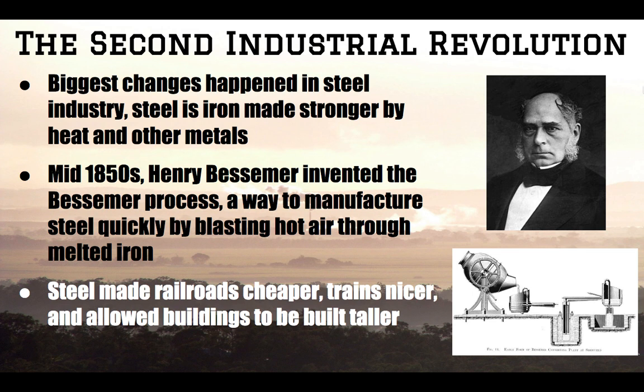In the second Industrial Revolution, the biggest changes are going to happen in regards to steel — a material made stronger by heat and other metals, stronger than iron or any other metal at the time. A man named Henry Bessemer invented a way to manufacture steel quickly and cheaply by blasting hot air through melted iron to quickly remove impurities. Something that used to take days now would take 10 to 20 minutes, making steel faster to produce, and people wanted to produce it because it was such a strong material.